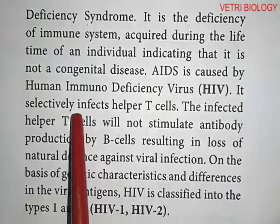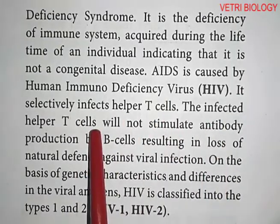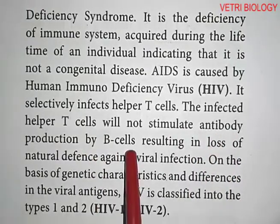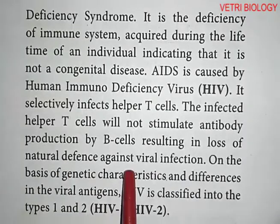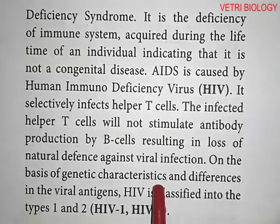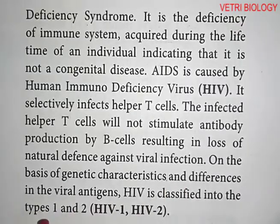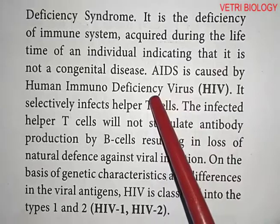HIV selectively infects helper T-cells. The infected helper T-cells will not stimulate antibody production by B-cells, resulting in loss of natural defence against viral infection. On the basis of genetic characteristics and differences in the viral antigens, HIV is classified into two types: type 1 and type 2.